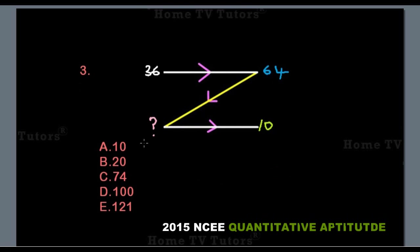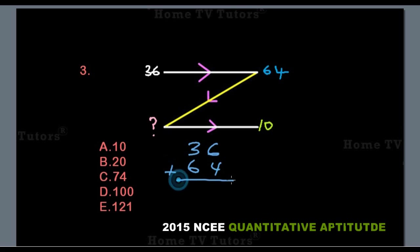Now we have to find the missing number at the bottom left. Remember, the summation of the two numbers at the top slides down to give us the number at the bottom left. So 36 plus 64: 6 plus 4 is 10, write down 0, carry 1 to the next column; 3 plus 6 plus 1 gives us 10. So the missing number is 100, and the answer option D is the right answer.